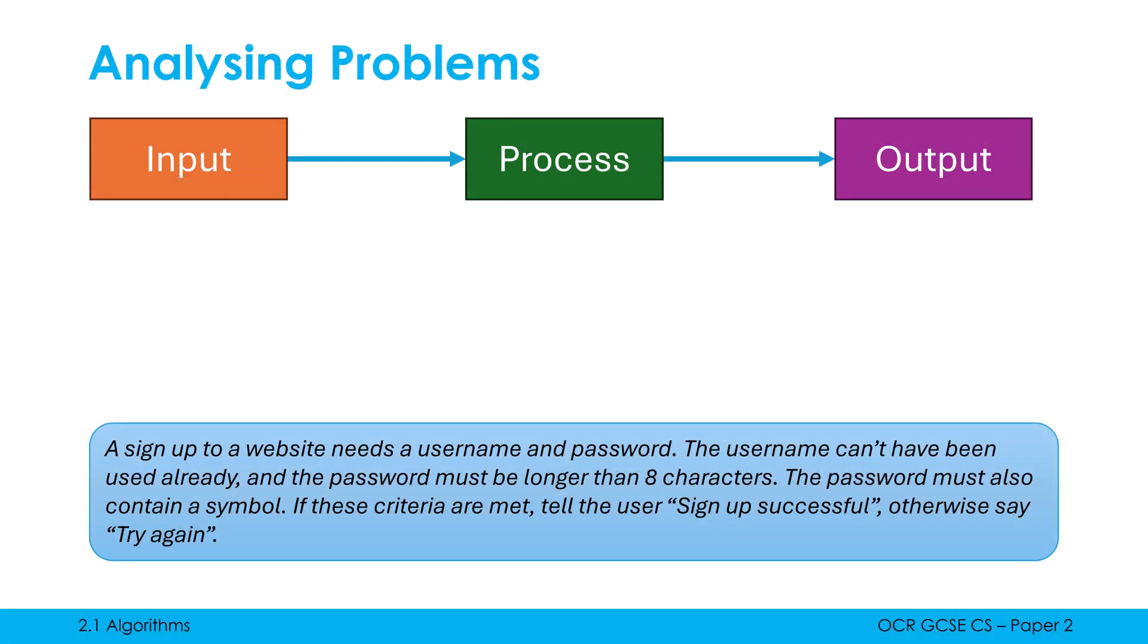Now just to give you a final example of how this might manifest itself in paper two, they might give you a problem to analyze. And you might have to pick apart what are the inputs, what is the processing needing to be done, and what are the outputs involved in this. So here is a scenario, a sign up to a website needs a username and password. The password can't have been used already, and the password must be longer than eight characters. The password must also contain a symbol. If these criteria are met, tell the user sign up successful, otherwise say try again.